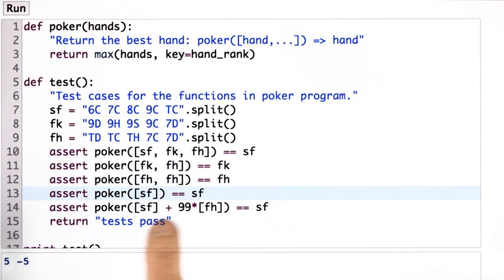And here I've chosen a list with one straight flush and 99 full houses. And I say when 99 full houses play a straight flush, the straight flush wins.